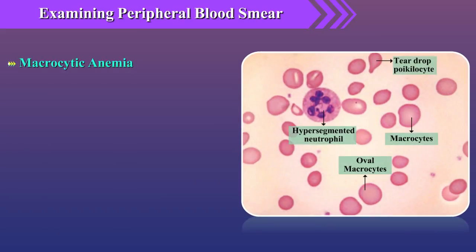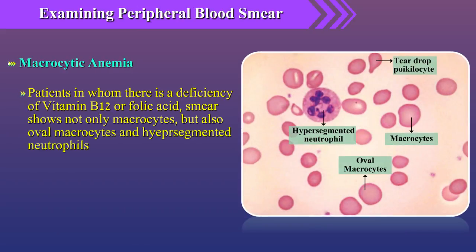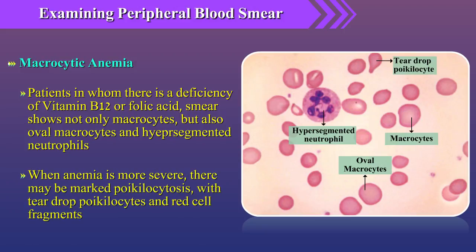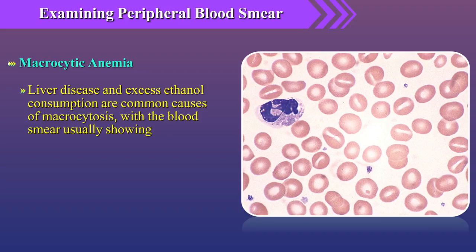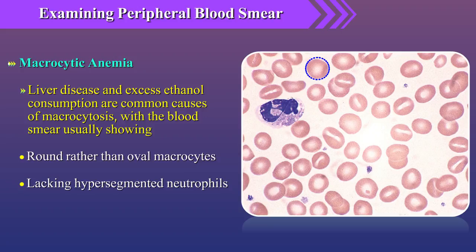In macrocytic anemias, for patients with deficiency of vitamin B12 or folic acid, the smear shows not only macrocytes but also oval macrocytes and hypersegmented neutrophils. When anemia is more severe, there may be marked poikilocytosis with teardrop poikilocytes and red cell fragments. Liver disease and excess ethanol consumption are common causes of macrocytosis, with the blood smear usually showing round rather than oval macrocytes and lacking hypersegmented neutrophils.